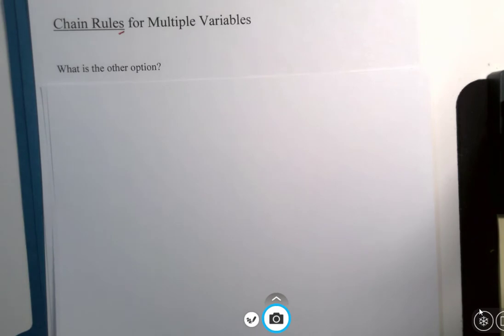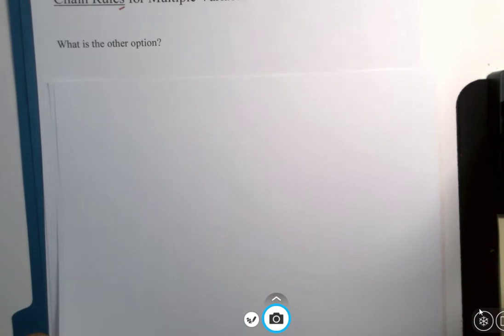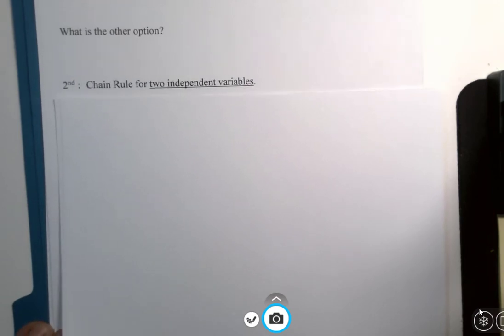So let me introduce to you the other member of the chain rule family. The other option is if we have more than one independent variable that we're playing in there. Two independent variables, right? Clever, huh?